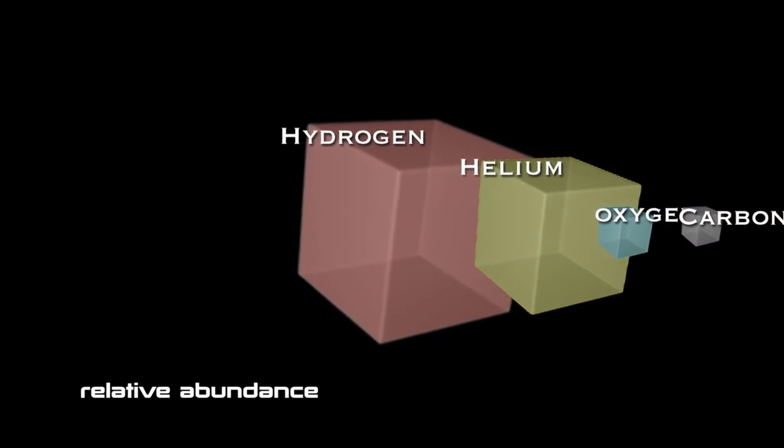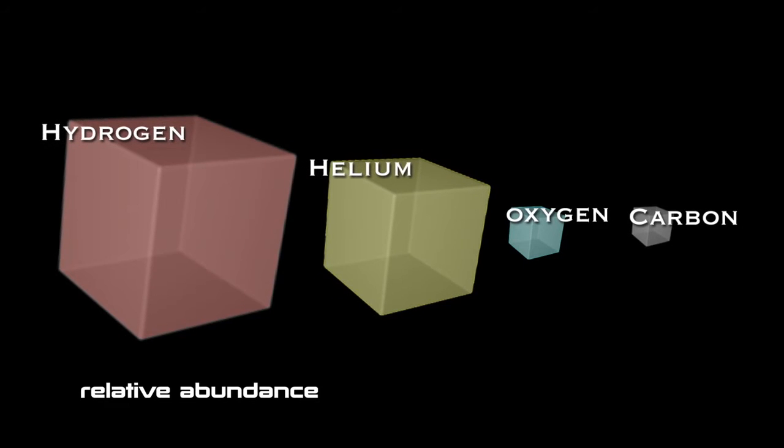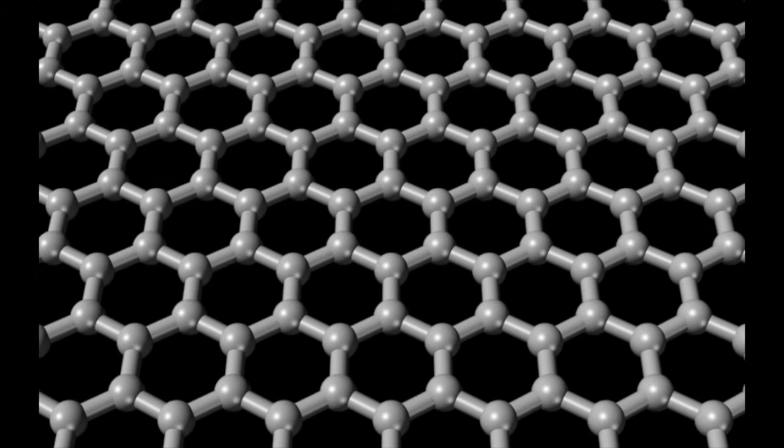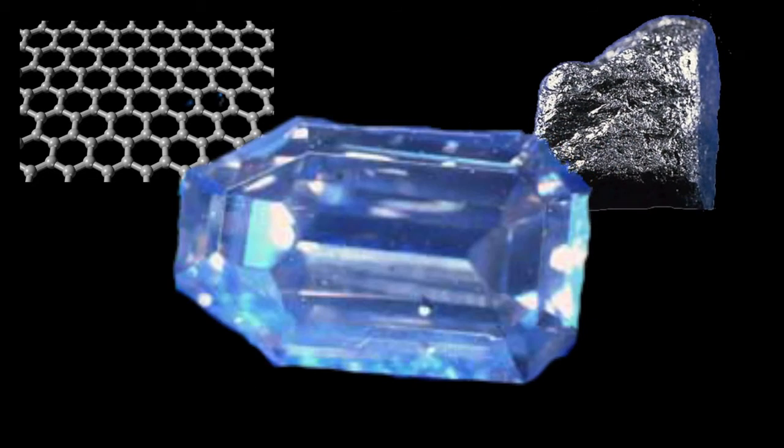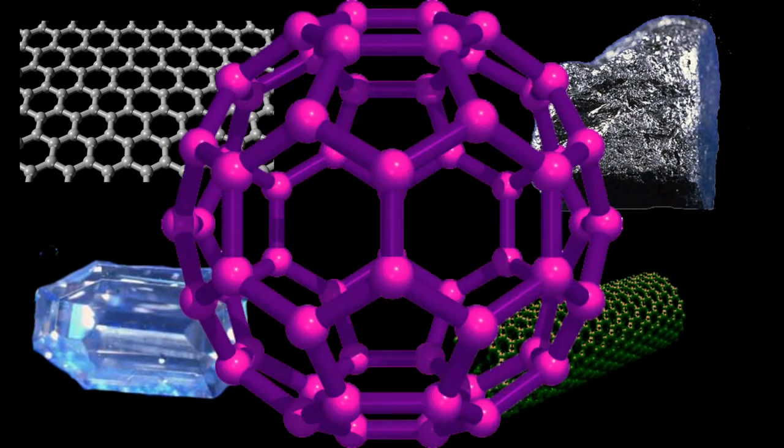Carbon is the fourth most abundant element in the universe and takes on a wide variety of forms: the honeycomb-like graphene, the pencil lead graphite, diamond, cylindrically structured nanotubes, and hollow spheres called fullerenes.